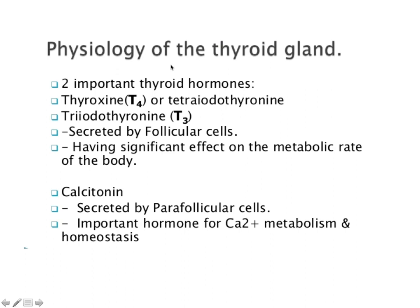Now the physiology of the thyroid gland. The follicular cells of the thyroid gland produce two main hormones: first is T4, that is tetraiodothyronine, also called thyroxine; and the second is T3, that is triiodothyronine. They have a significant effect on the metabolic rate of the body. The second hormone is calcitonin, secreted from the para-follicular cells, which is important for calcium ion metabolism and homeostasis — balancing minerals like calcium ions in our body.